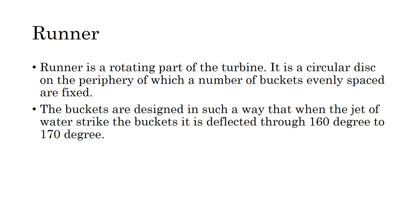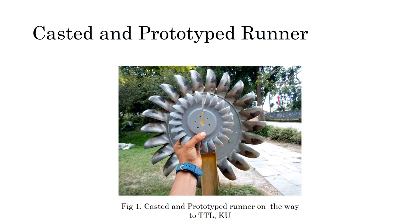The buckets are designed such that when the jet of water strikes the bucket it gets deflected through 160 to 170 degrees. In the picture we can see the casted and the prototyped version of the runner on the way to the turbine testing lab at Kathmandu University. The runner held in hand is the model that has been used for the testing process described in this paper.